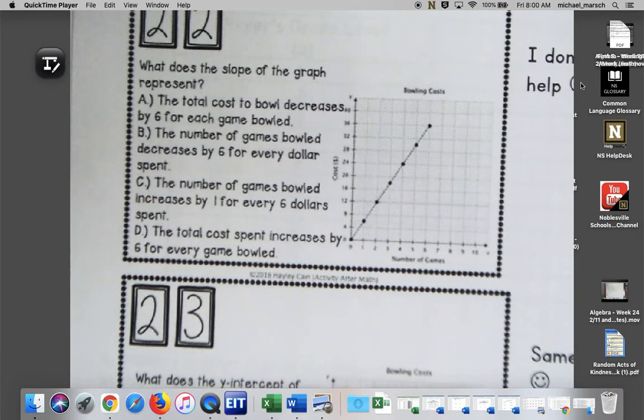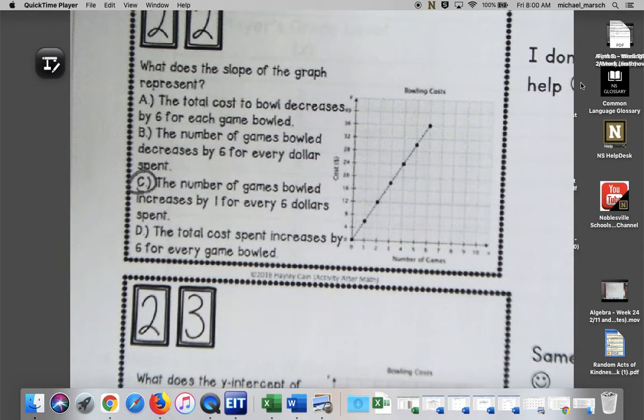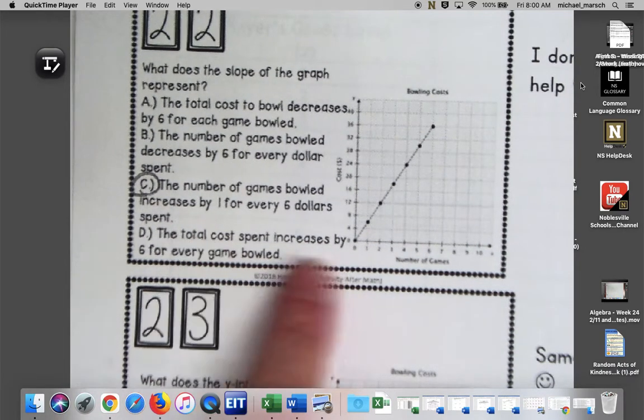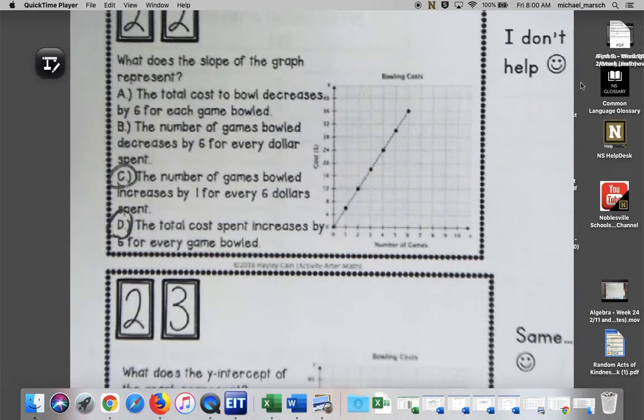The total cost to bowl decreases? No, come on now, that's not a decreasing graph. The number of games bowled decreased by six dollars for every dollar spent? No. The number of games bowled increased by one for every six dollars? There we go. We could see that it costs, and then the total cost increases by six for every game bowled. I mean, I guess D could be an answer too because it is increasing. We'll say C and D. If you put D, I'll take it.